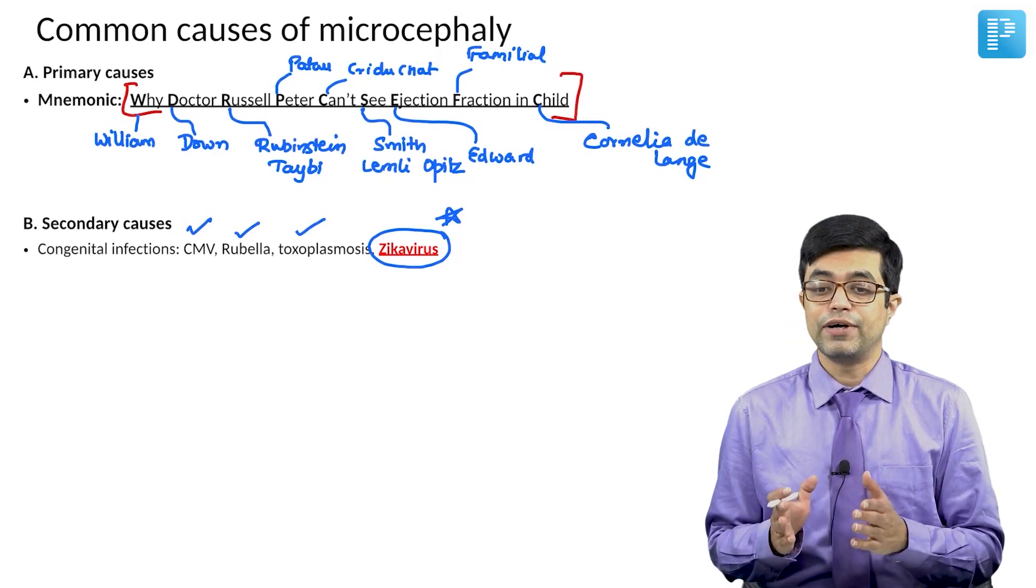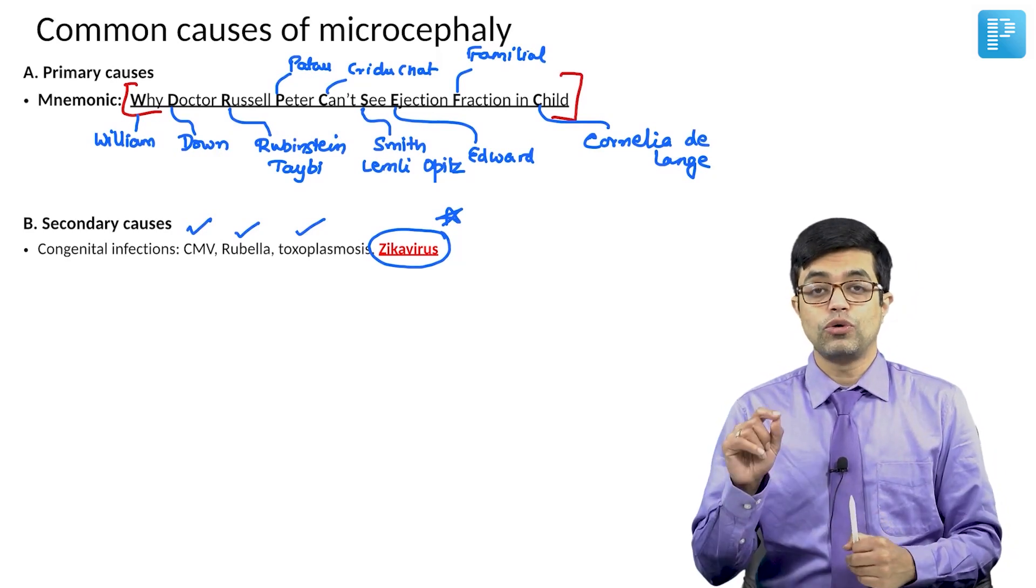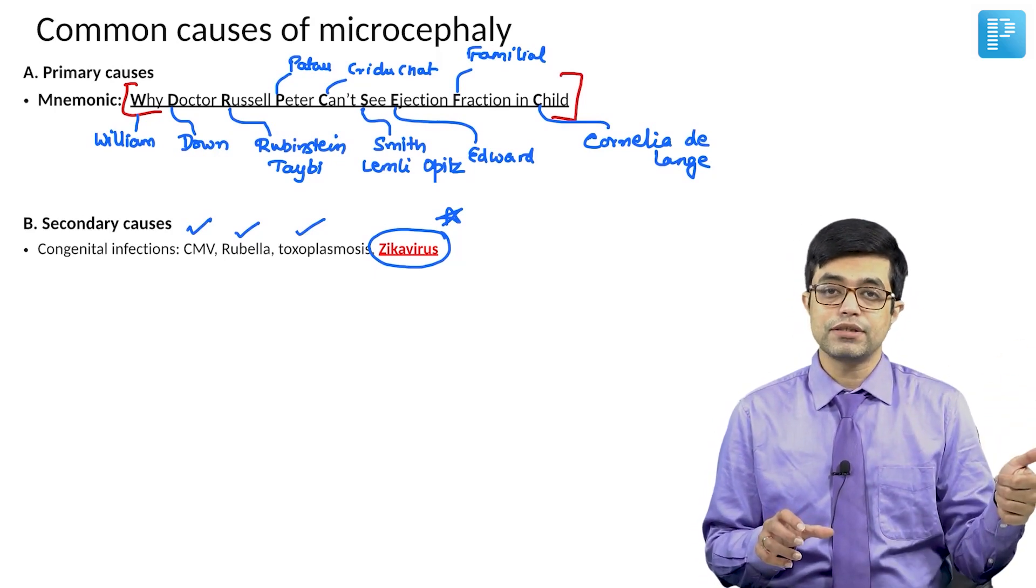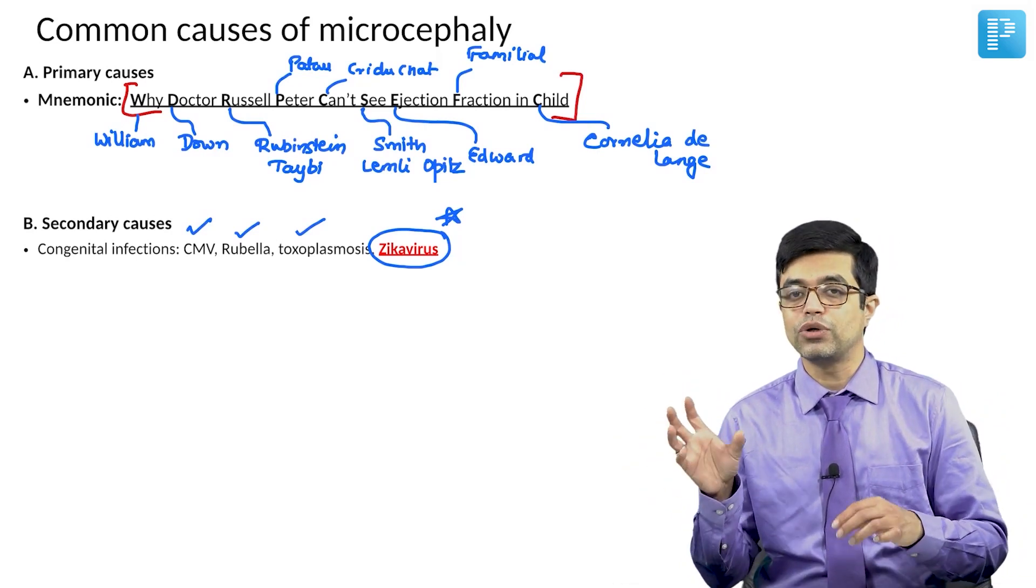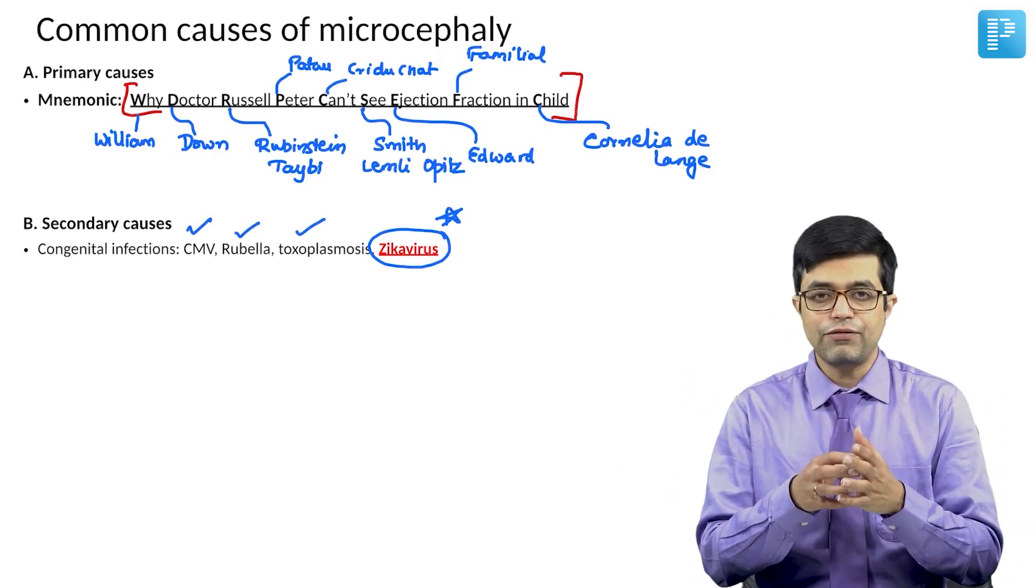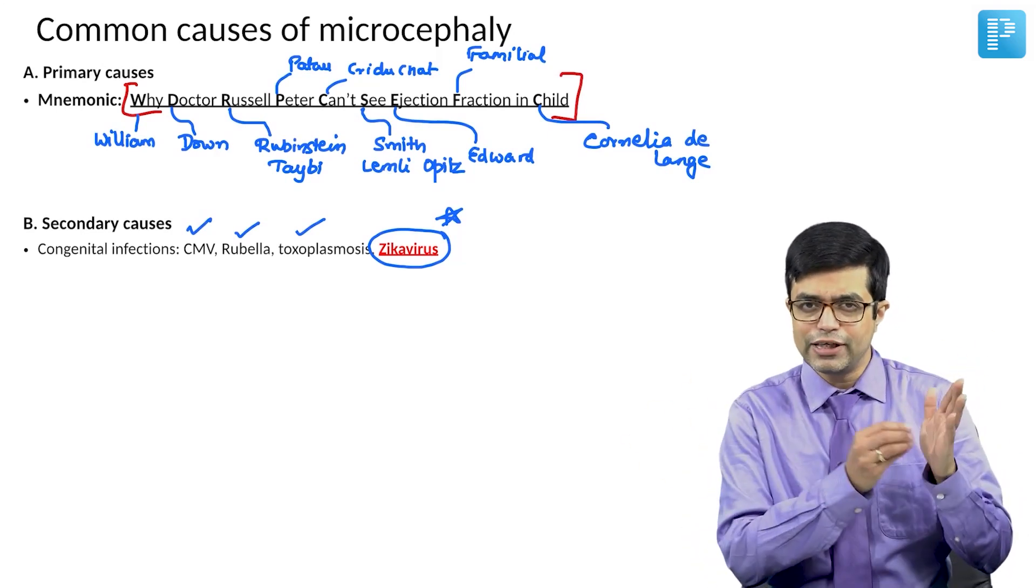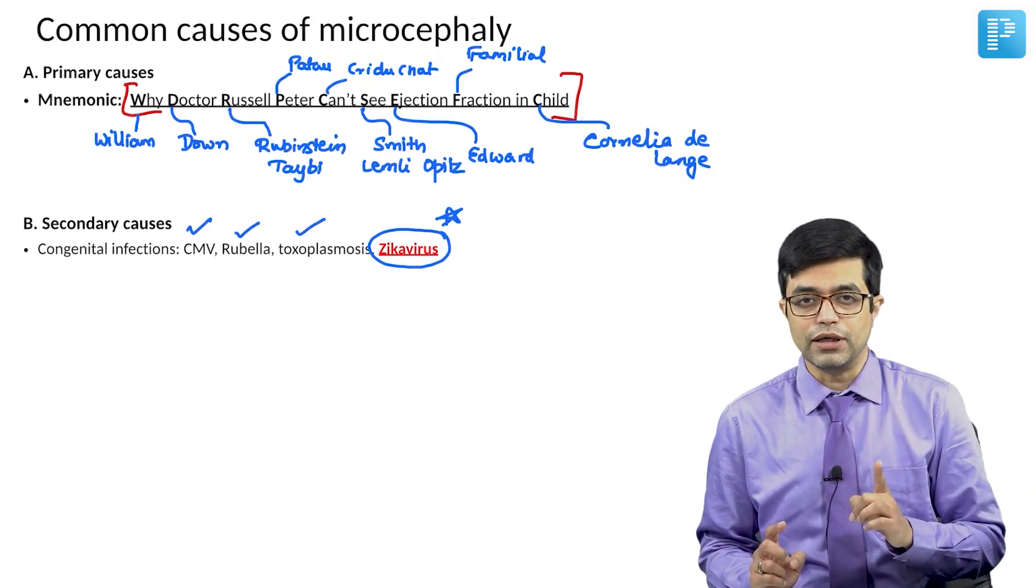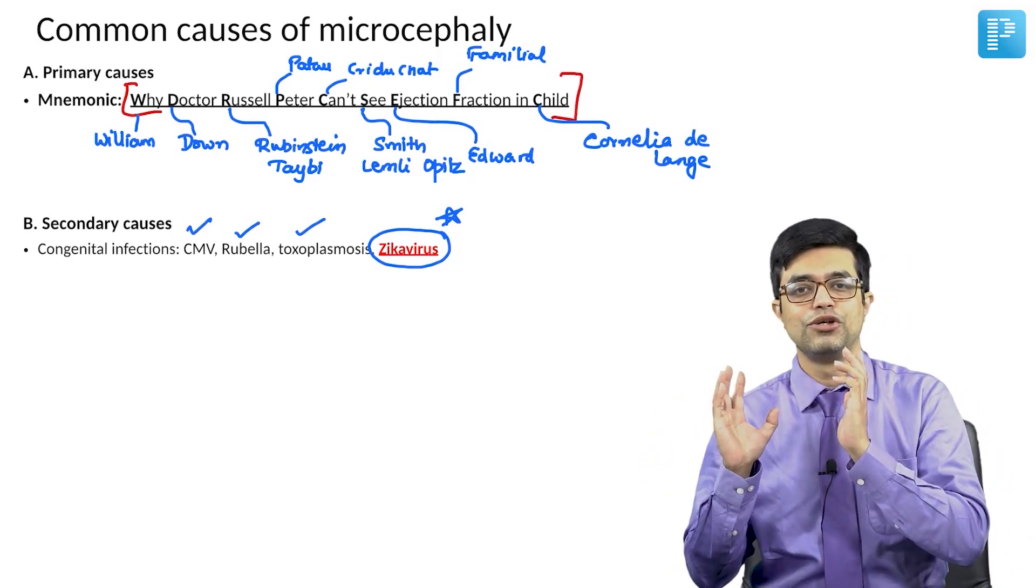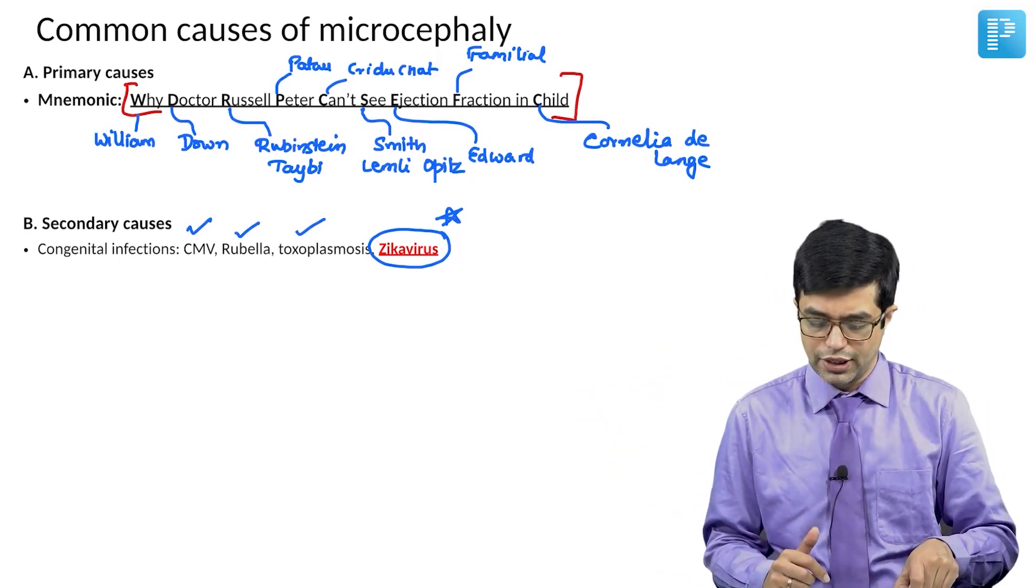India fortunately has been relatively unaffected from this particular infection. Another point to remember is toxoplasma. Congenital toxoplasmosis can have either a large head, that is hydrocephalus, or it can have a small head, that is microcephaly. Remember that most congenital infections, if they affect the brain, they tend to produce microcephaly. Toxoplasma is unique that it can cause either microcephaly or hydrocephalus. When you talk about causes of hydrocephalus and congenital infection, then also toxoplasmosis will come there as one of the causes. But here, it is mentioned as one of the causes of microcephaly.